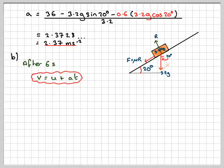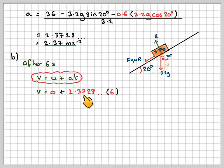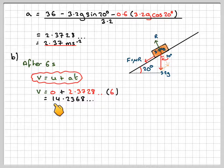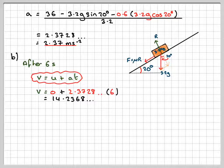After 6 seconds, when that force was there, V will be equal to U plus AT. Therefore V will be equal to the initial velocity, because it starts from rest, times my acceleration that I've calculated, don't use the rounded off one, times my 6 seconds, which gives me 14.2368. You should now store that value in your calculator somewhere.